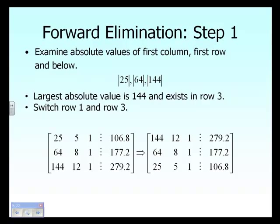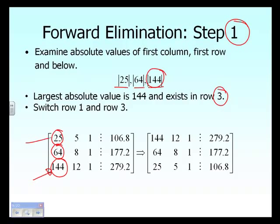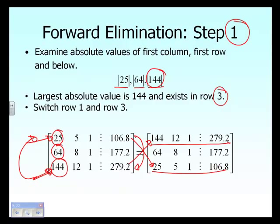What you have to do first is check whether you need to switch any rows. Since we are at step one of forward elimination, we look at the first column of the coefficient matrix, take the absolute value of all elements, and find that the maximum is 144, which exists in row three. So we switch row three with row one.